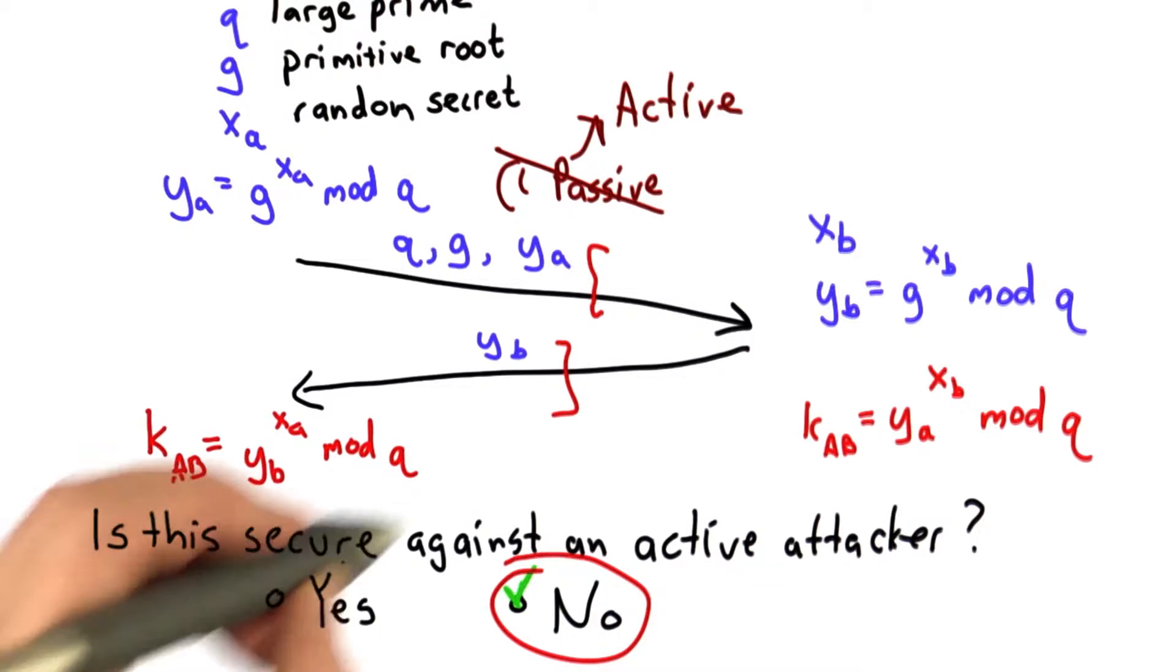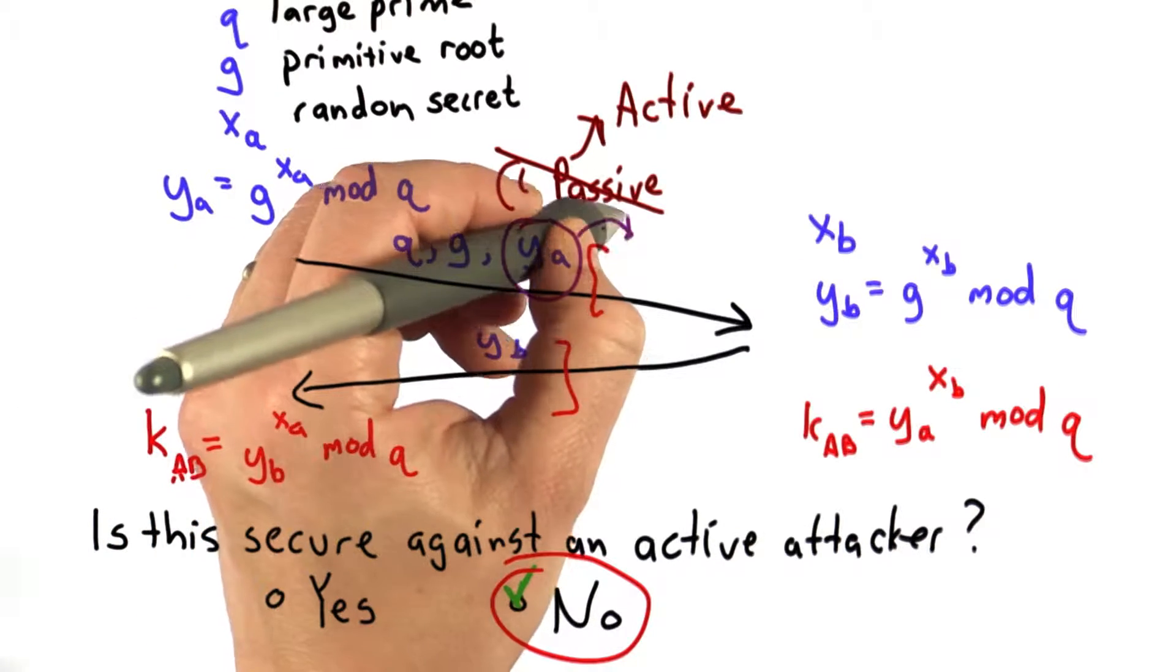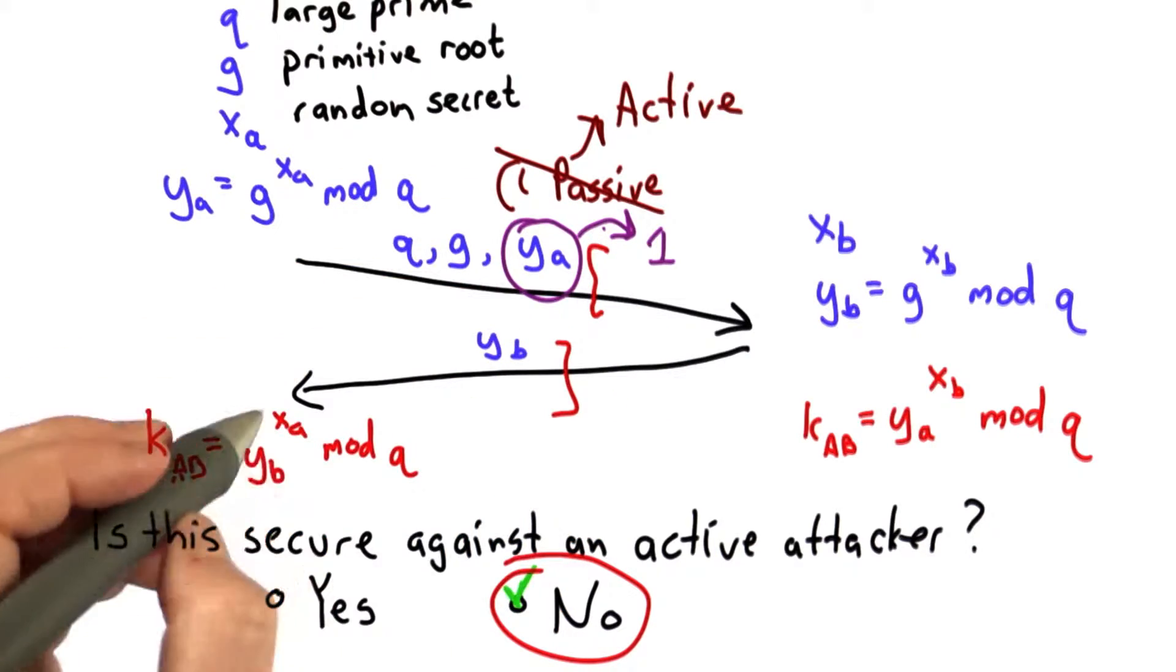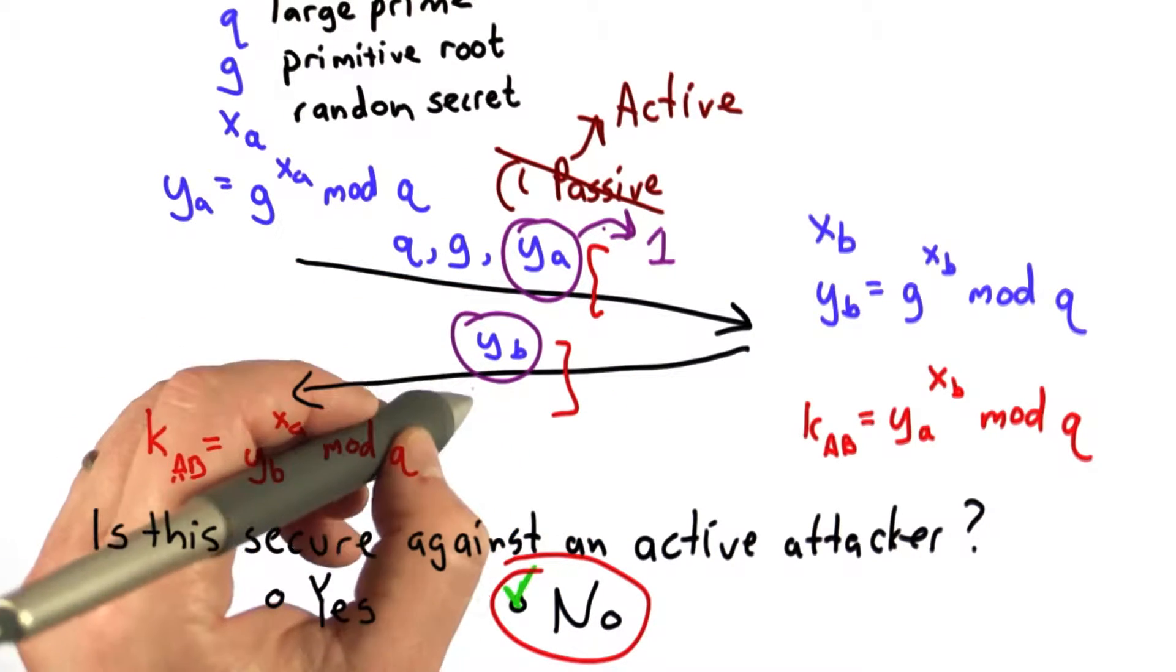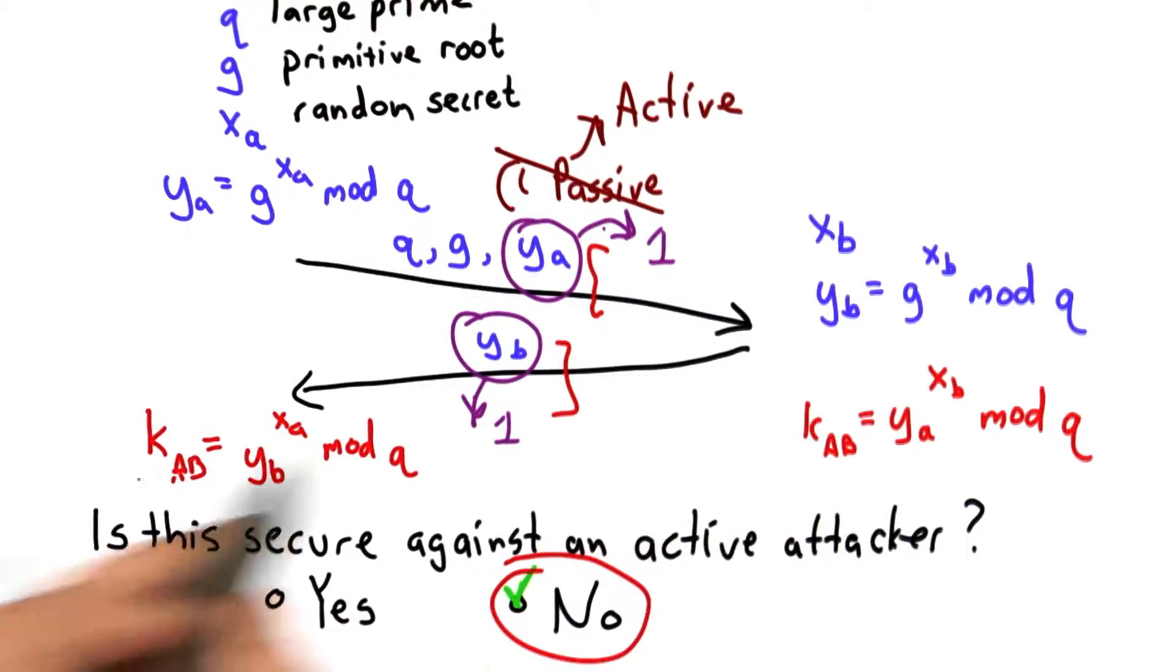One easy way to see how it could fail: if an active attacker can change the value of YA to 1 and change the value of YB to 1, well then Alice and Bob will still agree on a key, but that key would be 1 raised to their secret power, which is still 1.